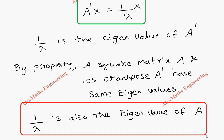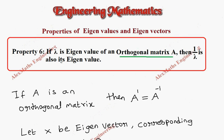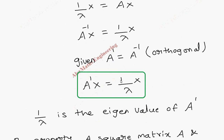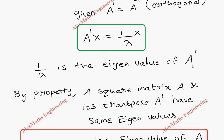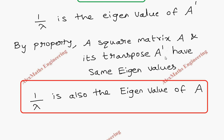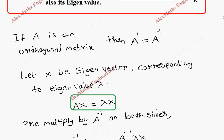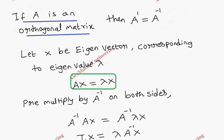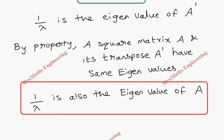And this completes the proof. In summary: if lambda is the eigenvalue of orthogonal matrix A, then we proved that 1 by lambda is the eigenvalue of A inverse. But since A is orthogonal, A inverse and A transpose are the same. So 1 by lambda is the eigenvalue of A transpose, and by the property that a square matrix and its transpose have the same eigenvalues, 1 by lambda is also the eigenvalue of matrix A when it is orthogonal.